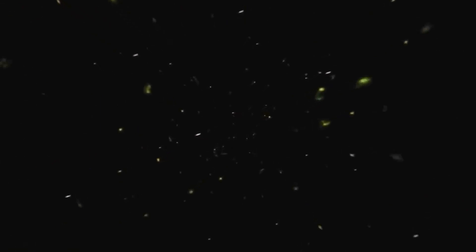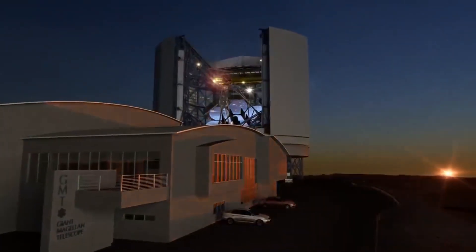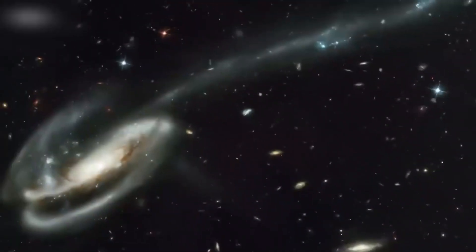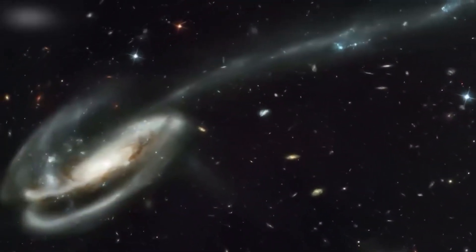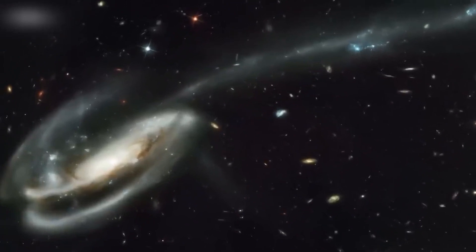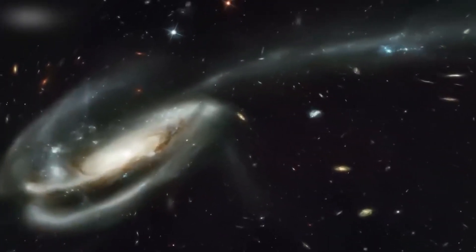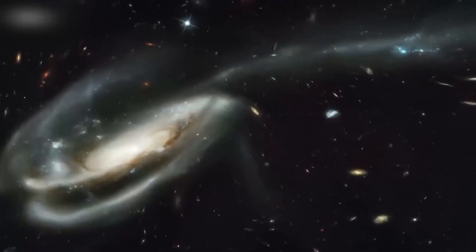Another theory posits that dark matter, which constitutes about 85% of the universe's total matter, could have played a more significant role in the creation of these colossal galaxies than previously surmised. Dark matter's presence might have impacted gravitational dynamics in the early universe, potentially contributing to the rapid development of these massive galaxies.